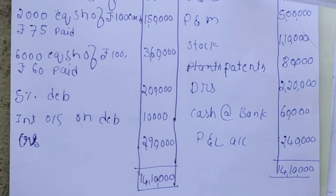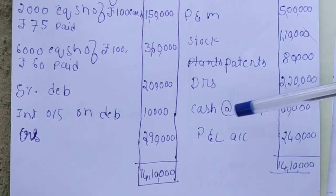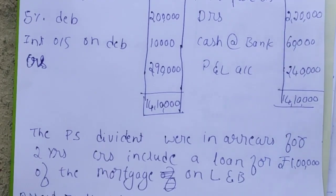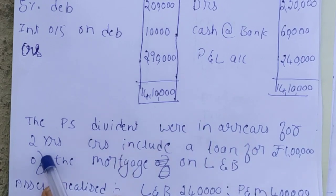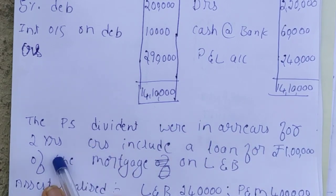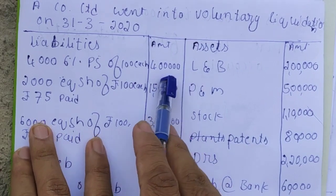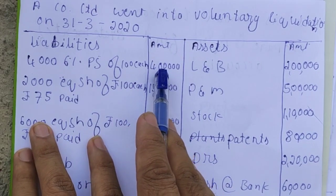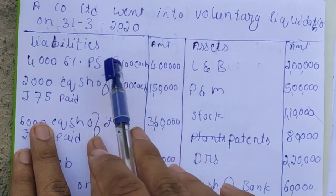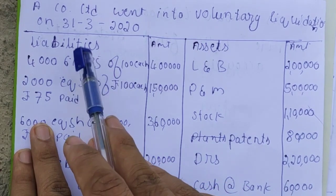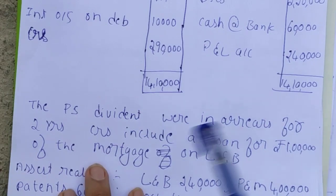Outstanding interest on debentures and creditors is mentioned. Assets include land and building, plant and machinery, stock, patents, debtors, cash, and a P&L account. The preference dividends were in arrears for two years. Preference share capital is Rs.4 lakh, and the preference dividend rate is 6% per year on Rs.4 lakh, due for two years.